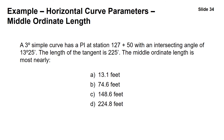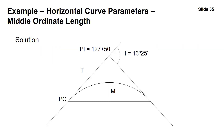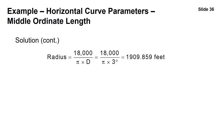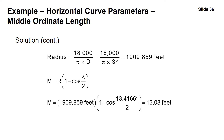Finally, we find the middle ordinate length — the distance between the midpoint of the chord and the midpoint of the curve. Using M equals R times 1 minus the cosine of delta divided by 2: 1909.859 feet times 1 minus the cosine of 13.4166 degrees divided by 2 gives a middle ordinate length of 13.08 feet — answer A.